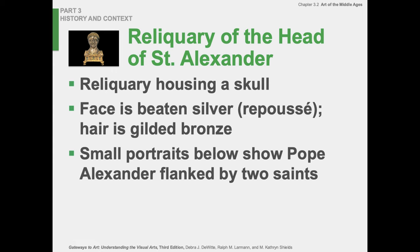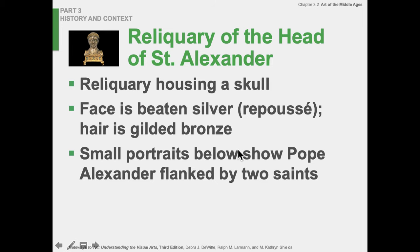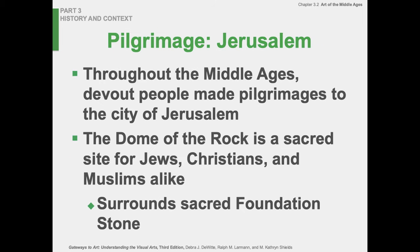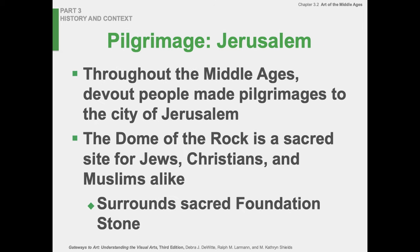The reliquary is housing the skull. It's silver repoussé on the face — that darkish silver with a bit of tarnish — and bronze for the hair, that golden color. The small portraits below show the pope flanked by two saints. It was important to go to the church where the reliquaries were, and we'll get into that more with the churches.